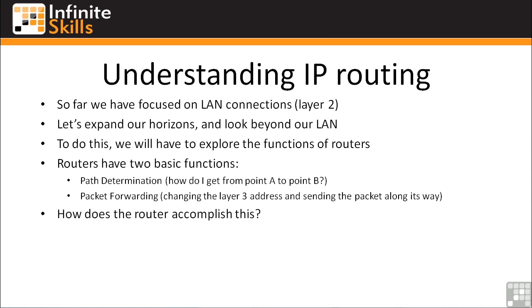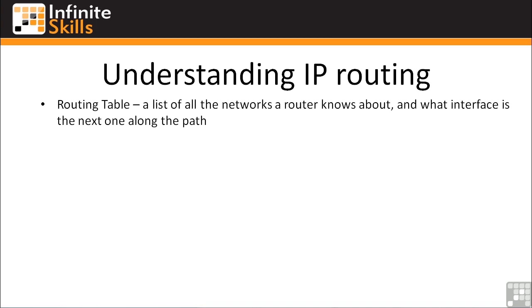So how does a router accomplish its path determination functions? It uses what's called the routing table. The routing table is essentially just a list of all the networks that a router knows about and which interface is the next one along the path. For most of the labs in ICND1, the routing table will be very simple, because most of our routers will only have two interfaces — one for the LAN and one for the WAN interface.